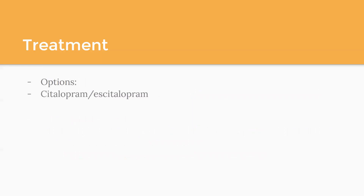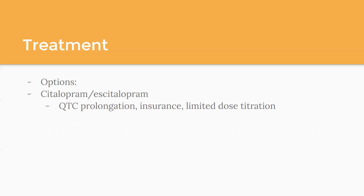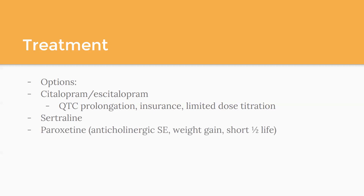SSRI and SNRI options: my first-line SSRIs are citalopram and escitalopram, which are helpful for anxiety specifically. Consider QTC prolongation if they have underlying heart conditions or are on other QTC-prolonging medications. Citalopram has limited dose titration — max 40 milligrams in primary care — versus sertraline, which you can start at 50 milligrams and go up to 200. Paroxetine is specific for anxiety but I don't typically prescribe it due to anticholinergic side effects, weight gain, and a short half-life that causes withdrawal effects if doses are missed. For SNRIs — venlafaxine or duloxetine — I don't typically prescribe these due to insurance coverage.